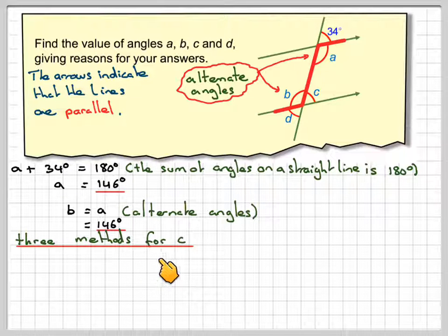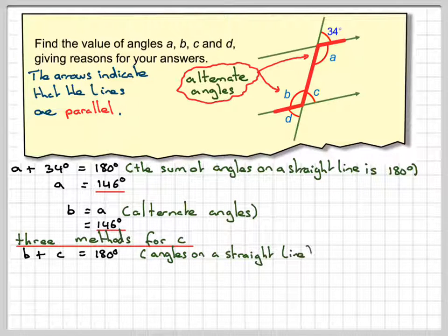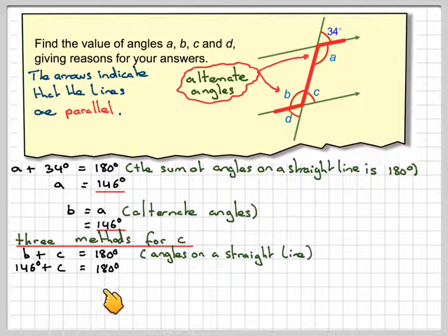Now, there are now three methods from this we can actually find C. One method is to do B plus C equals 180, because they're on a straight line. And that's going to give 146 plus C equals 180, so C will be 34. That's one method.